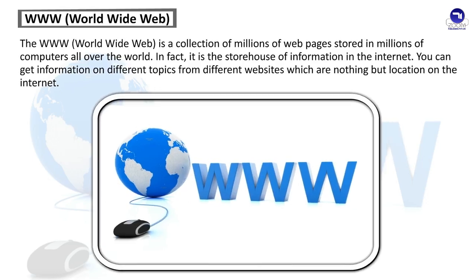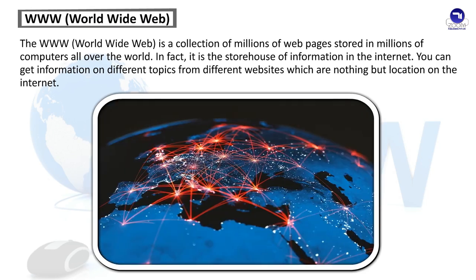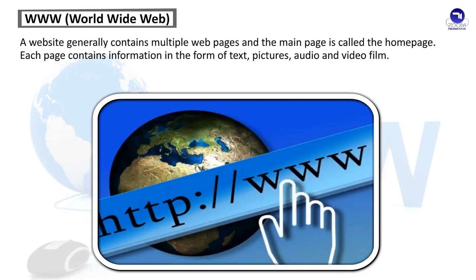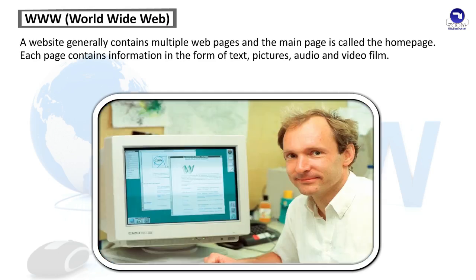WWW (World Wide Web): The WWW is a collection of millions of web pages stored in millions of computers all over the world. In fact, it is the storehouse of information on the Internet. You can get information on different topics from different websites, which are locations on the Internet. A website generally contains multiple web pages, and the main page is called the home page. Each page contains information in the form of text, pictures, audio, and video.